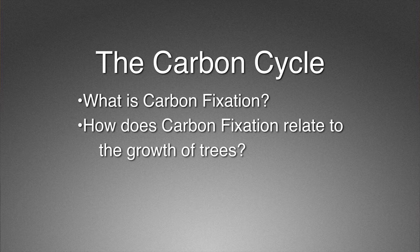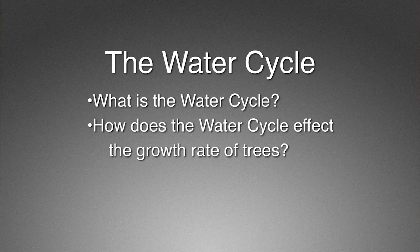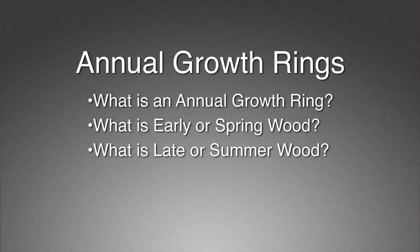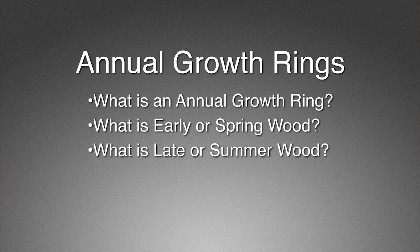I always like to outline what we should be learning at the end of the lesson. First is to discuss some aspects of the carbon cycle, define the concept of carbon fixation and how that relates to the growth of trees. Another is to relate availability of water and how the water cycle impacts tree growth. We'll look at annual growth rings — what they are, and aspects of one year's worth of growth, including early or spring wood and late or summer wood.